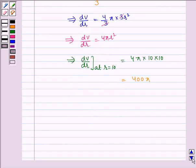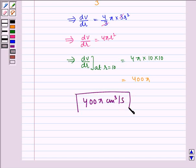Hence, required volume is increasing at the rate of 400 pi cm³ per second when radius is 10 cm. And this is the required answer. I hope you understood the question. Bye and have a nice day.